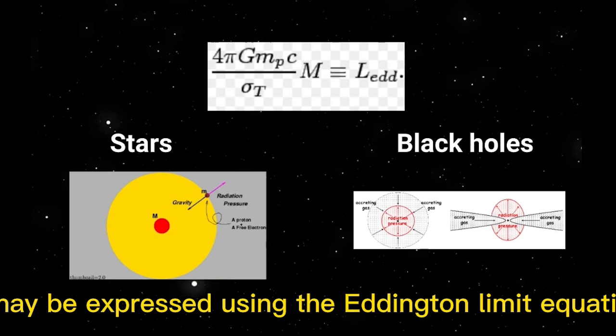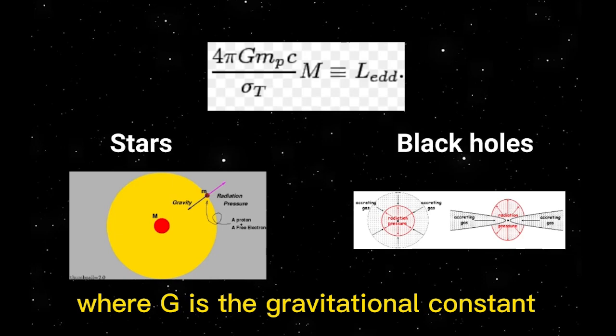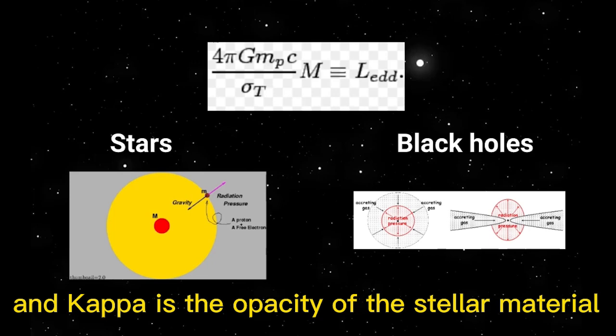Where G is the gravitational constant, M is the mass of the central object, c is the speed of light, and κ is the opacity of the stellar material. The Eddington limit can be used to estimate the mass of a black hole by observing the radiation emitted by the accreting gas or the luminosity of its accretion disk.